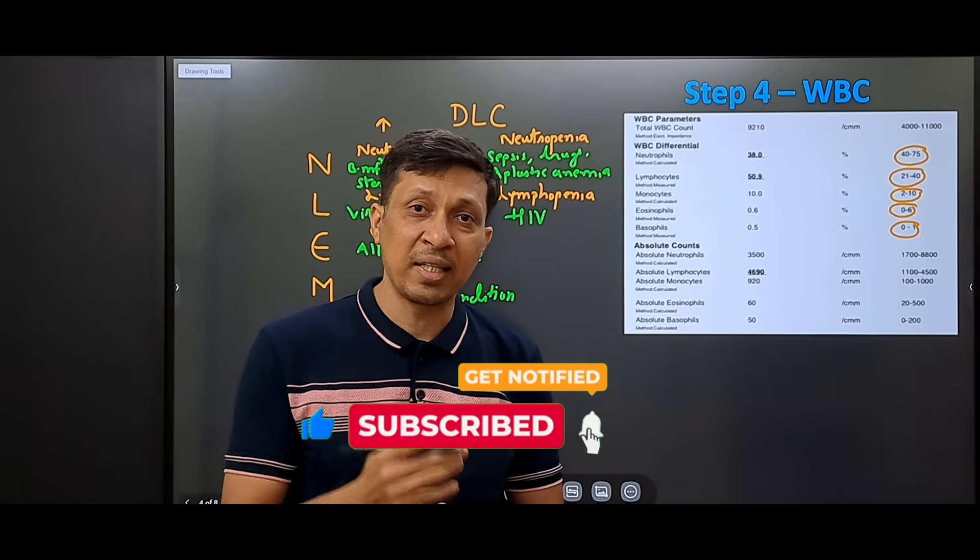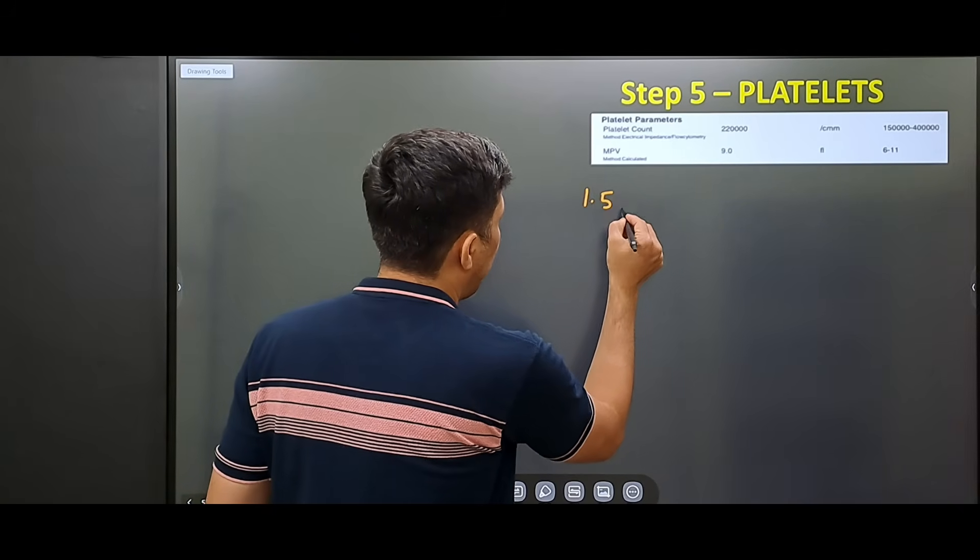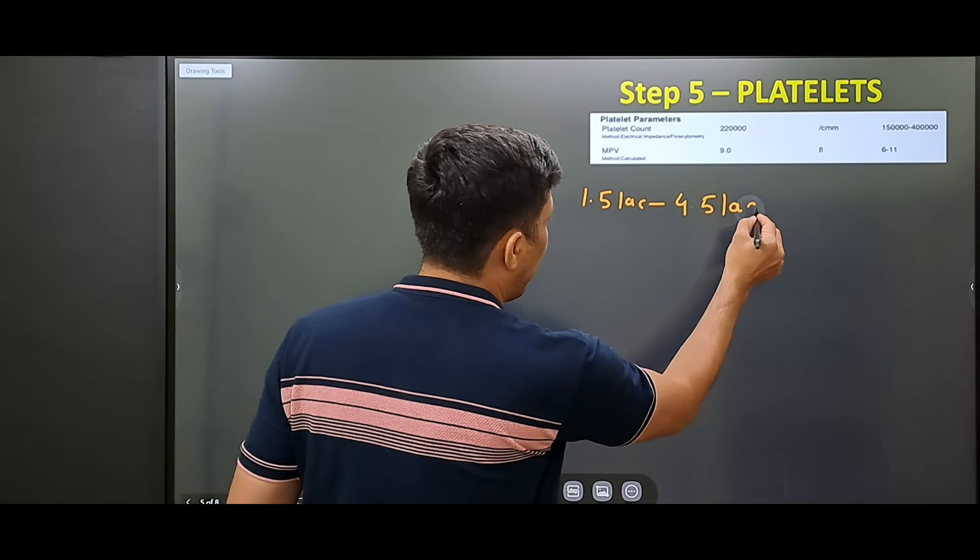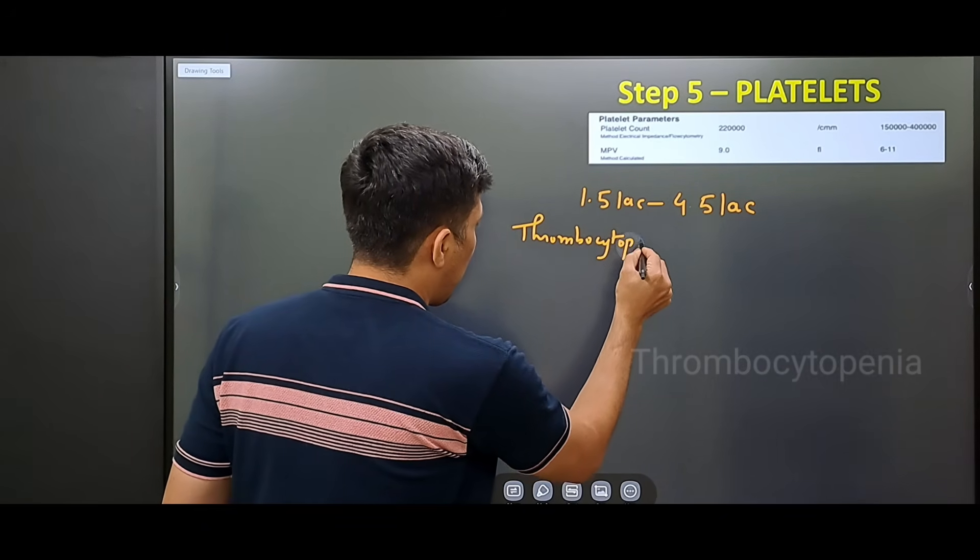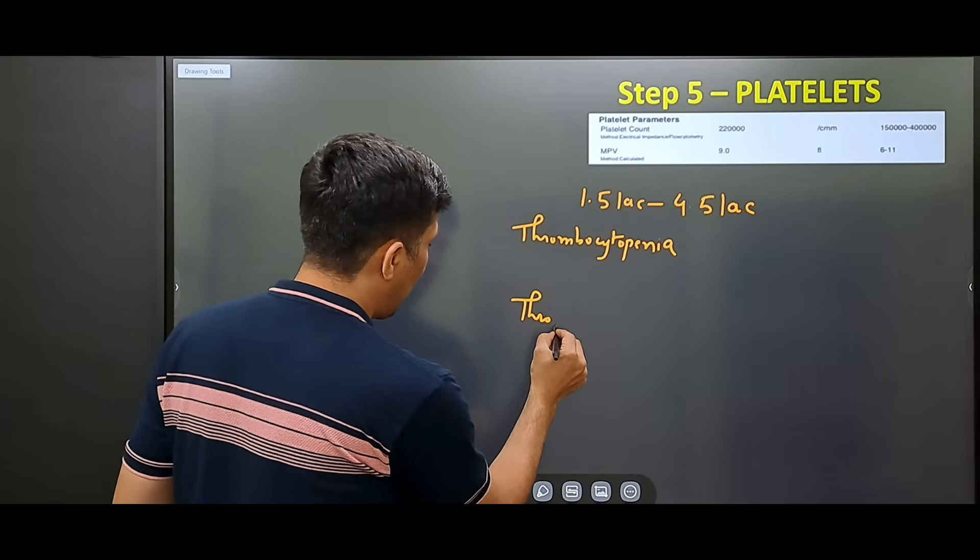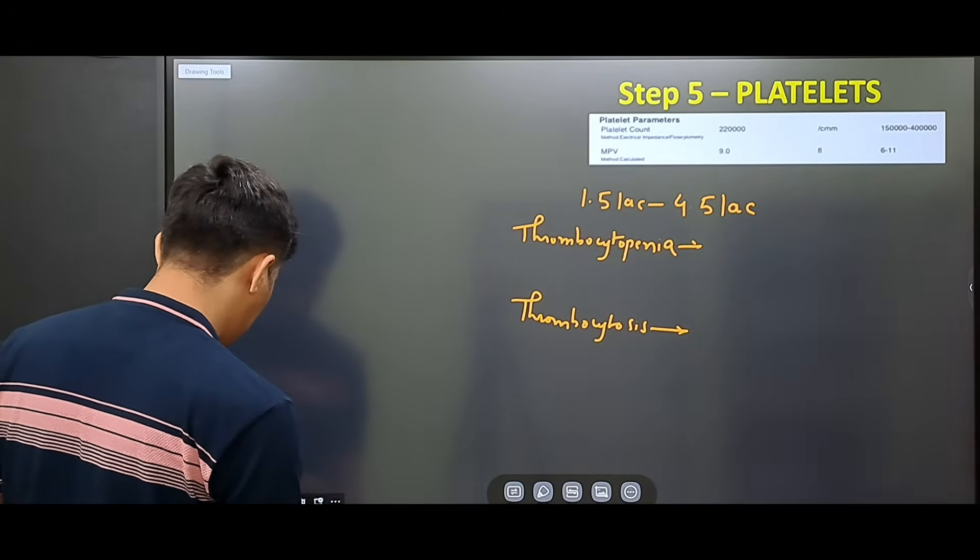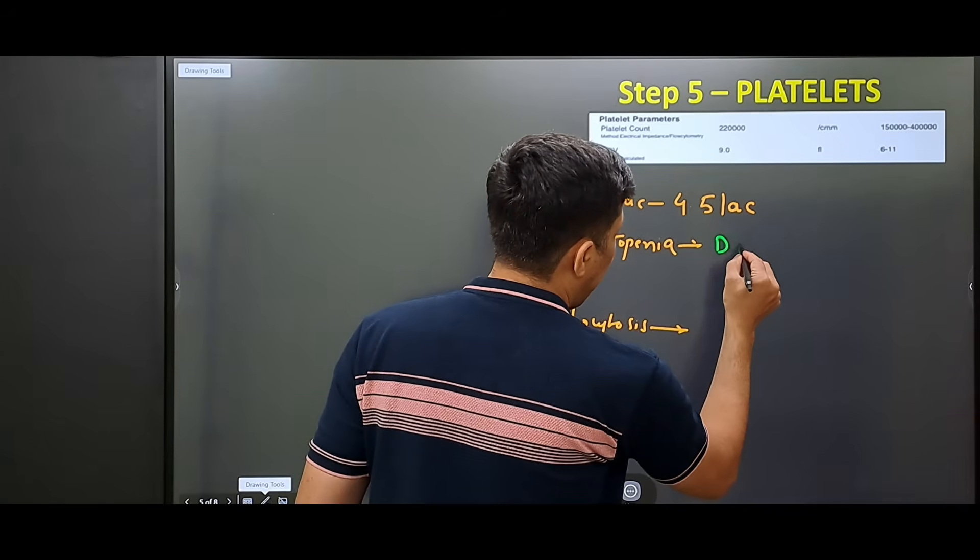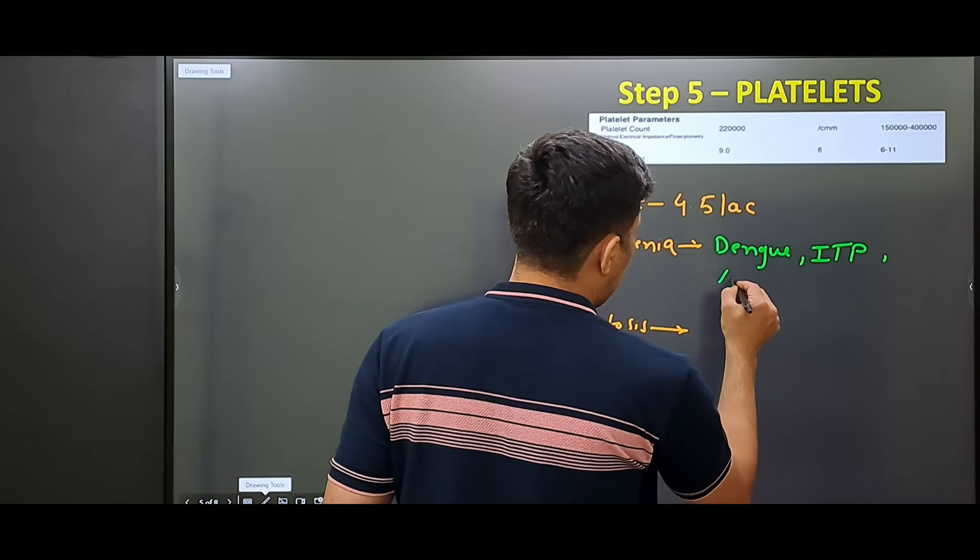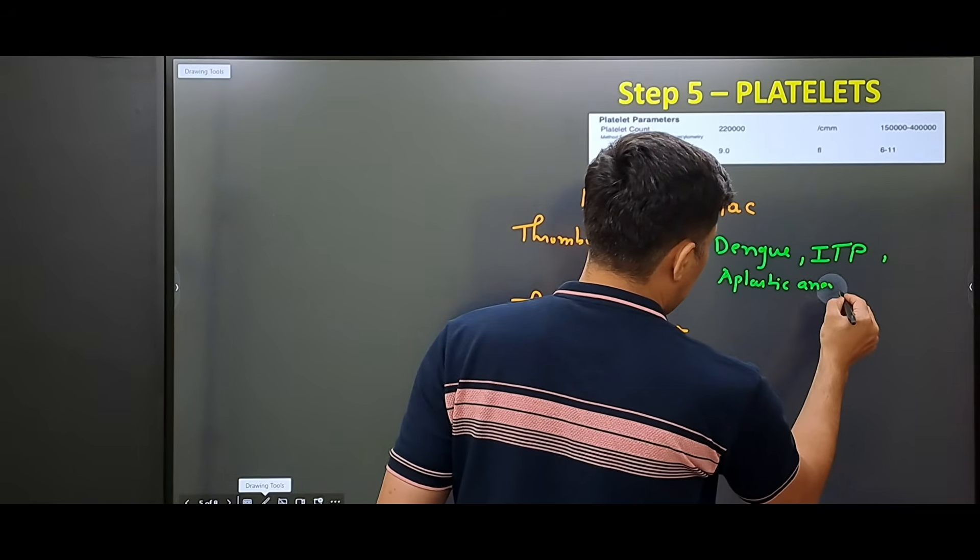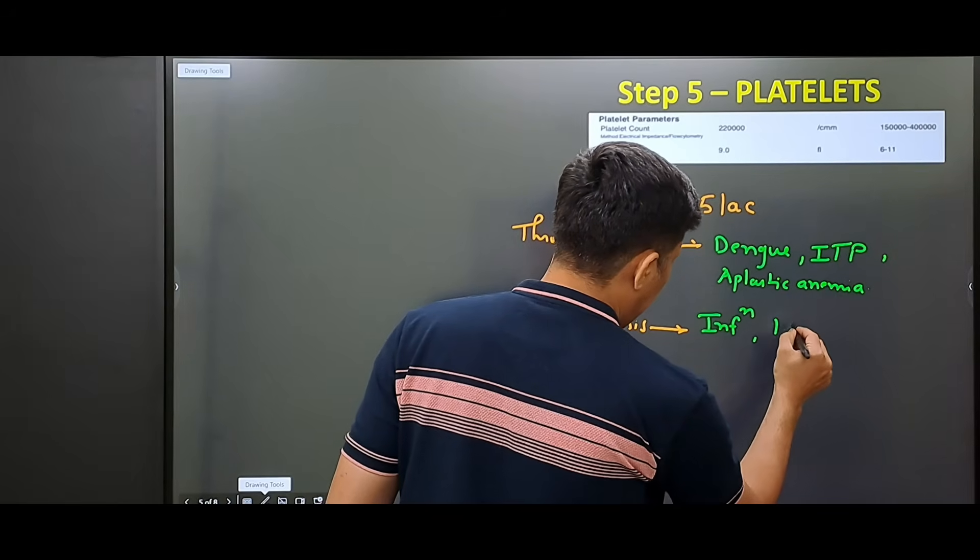Now we go to our last step, looking at the platelets. In the fifth step, we look at the platelets. The normal platelet count is 1.5 lakh to 4.5 lakh. When it is less than 1.5 lakh, we call it as thrombocytopenia. And when it is more, we call it as thrombocytosis. Thrombocytopenia is seen in dengue, idiopathic thrombocytopenic purpura, and it can also be seen in aplastic anemia. Thrombocytosis is seen in infections and certain malignancies.